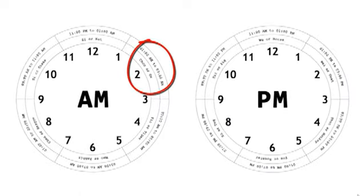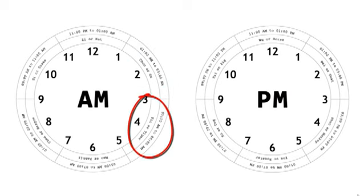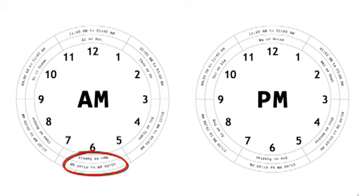Following the rat hour is chou shi, between 1 am and 3 am. Chou is associated with the ox, so this time period is also known as the ox hour. This is followed by yin shi, or the tiger hour, between 3 am and 5 am, and mao shi, or the rabbit hour, between 5 am and 7 am.